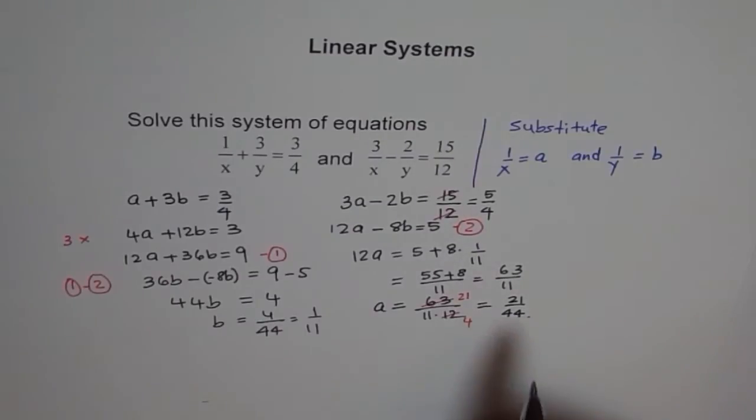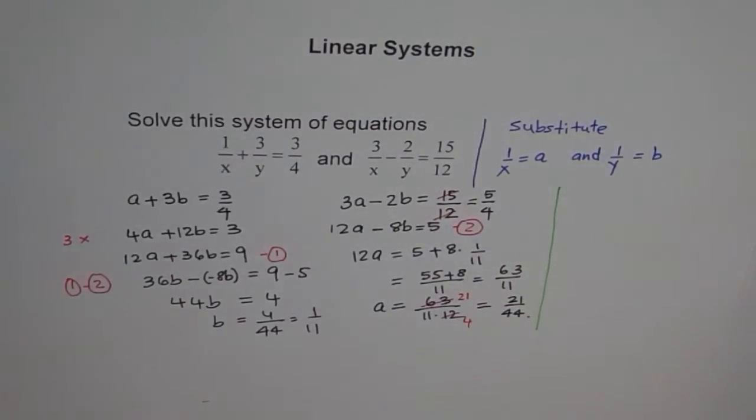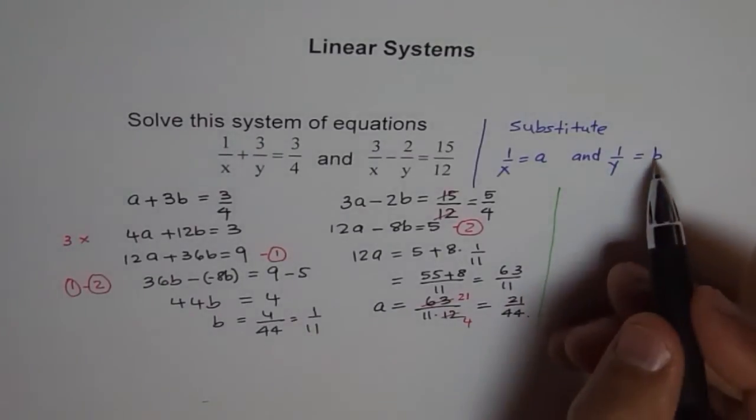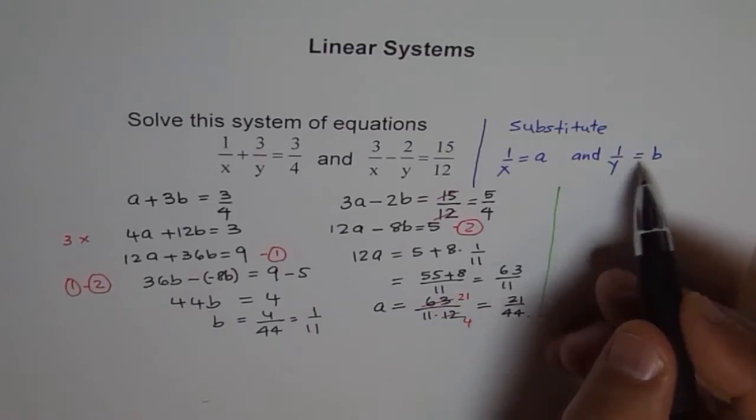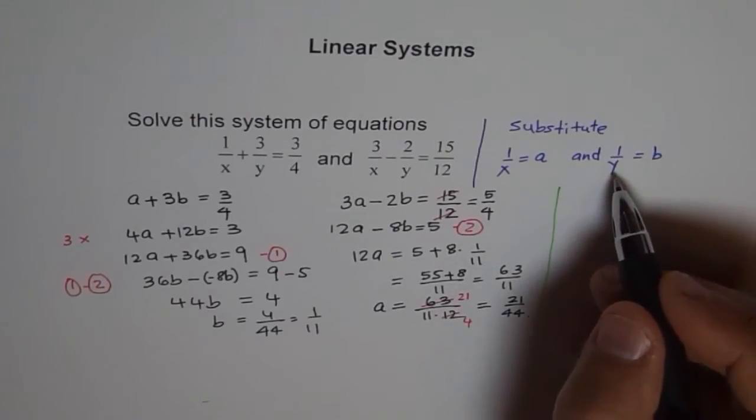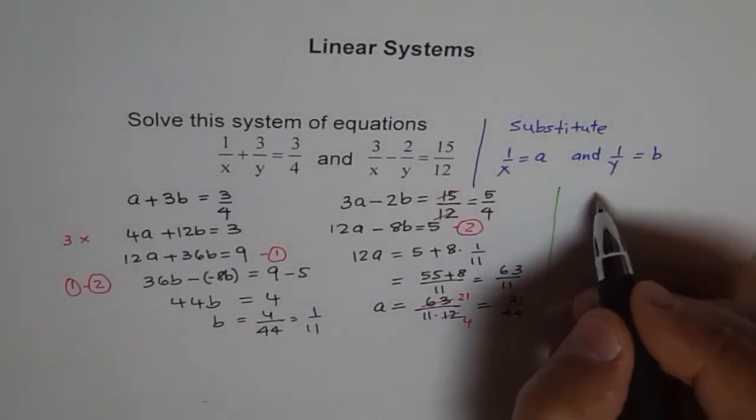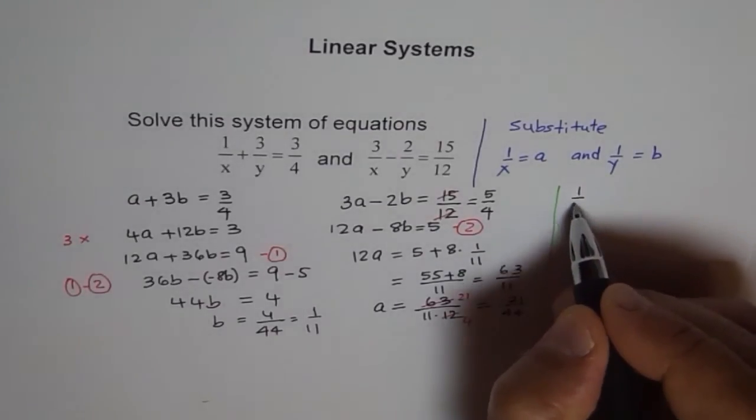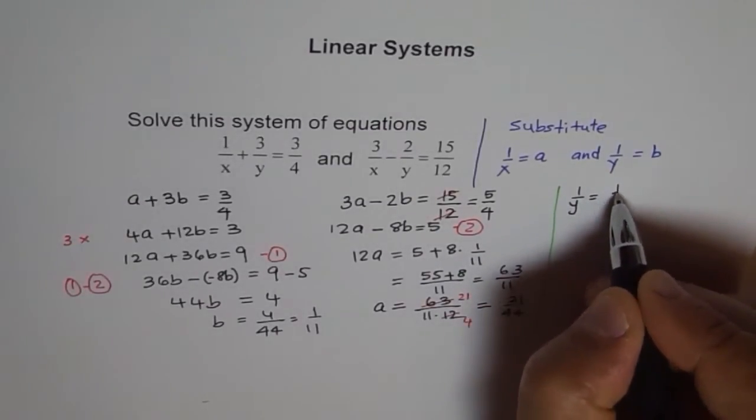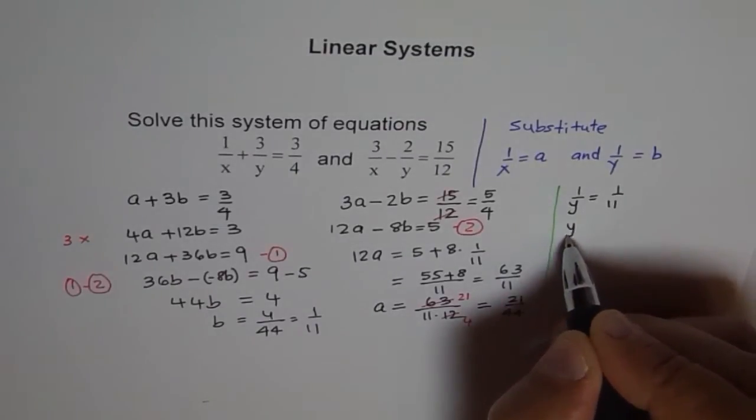Now let's look back into what our substitution was. We say B is 1 over 11, so that means B is 1 over 11, so Y is what? Y is 11. So from here we can write B is 1 over 11, so 1 over Y equals 1 over 11, which implies that Y equals 11.